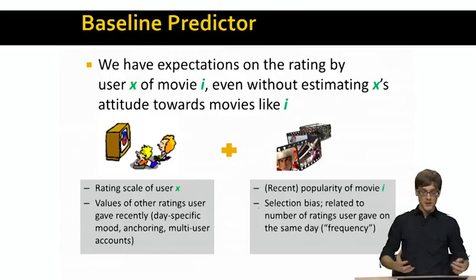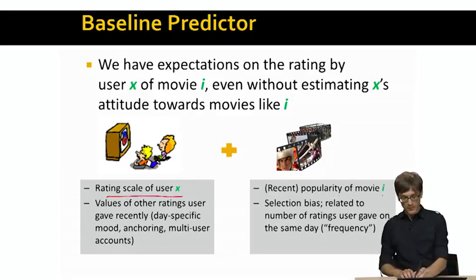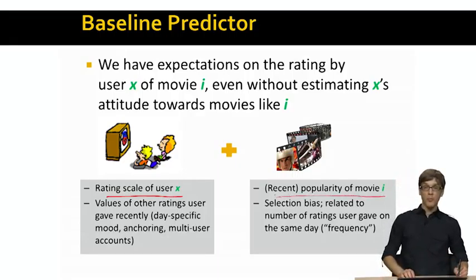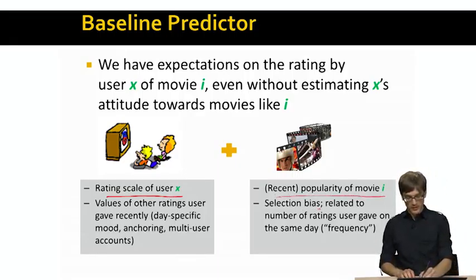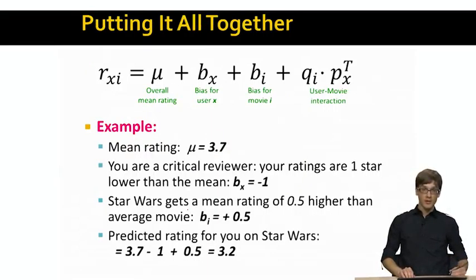And the way we can do this is basically we want to put everything together. So this means that we will have an expectation on rating by user x of movie i, even without estimating x's attitude towards the movies that are similar to i. So the idea is that I want to have a rating scale for user x, and I want to know some popularity of movie i. And I want to have some bias factor for the movie and also some factor for the user.